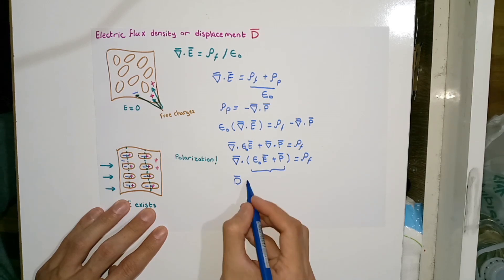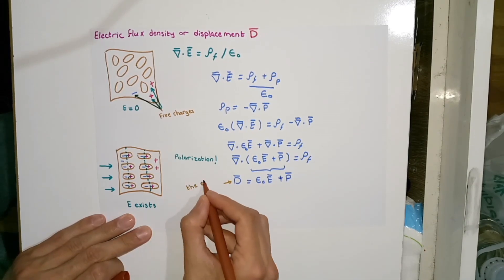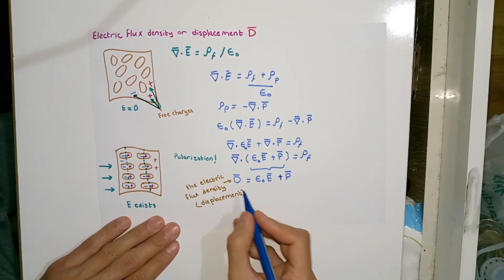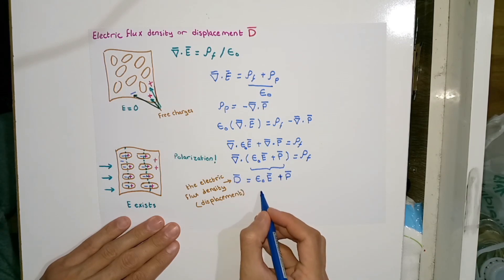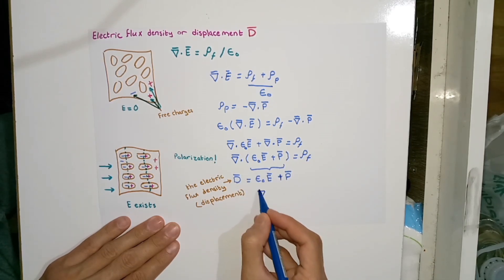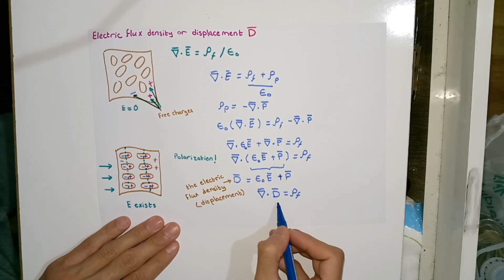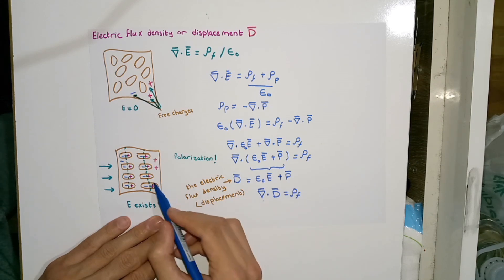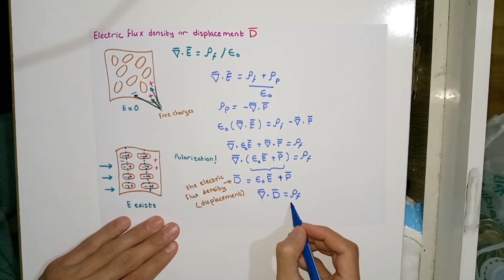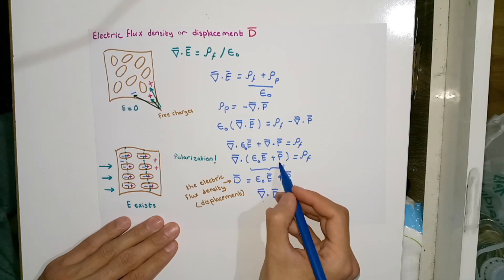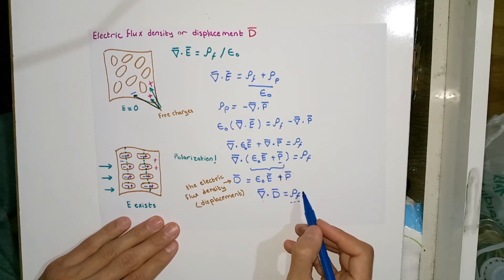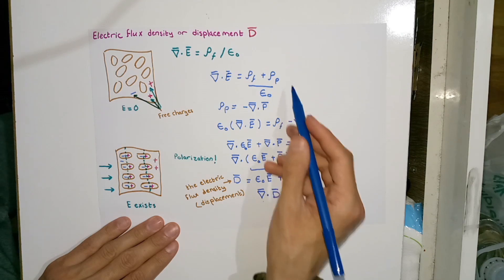The significance of the electric flux density vector D, also called the electric displacement, is that we can write this divergence equation such that the electric field in polarized media is expressed in terms of free charges only, without explicitly handling the polarization vector P or the volume polarization charge density ρ_P.